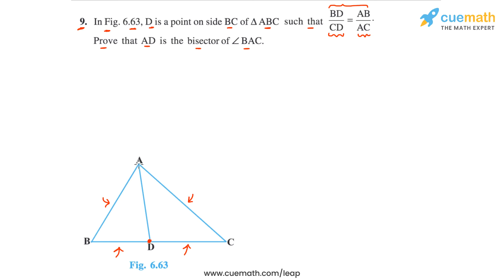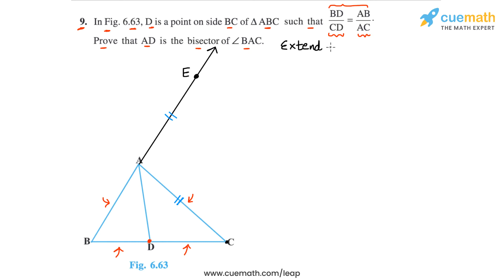We are going to extend side BA. In the angle bisector theorem problem we drew a parallel from C to segment DA, but in this case we are going to take a point E on this extended ray such that AE equals AC. So we extend BA, take point E on the extended ray such that AE equals AC, and also join C and E.